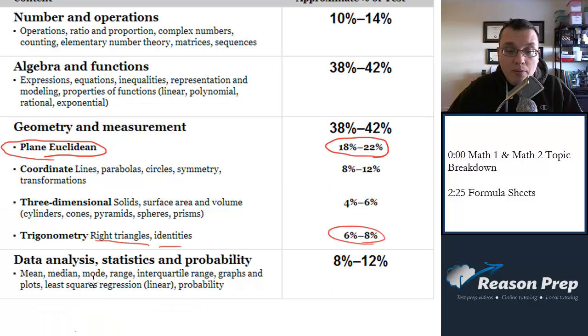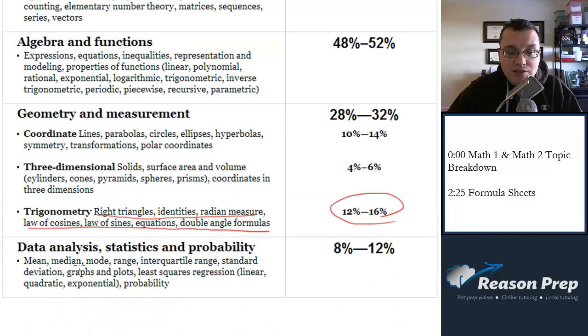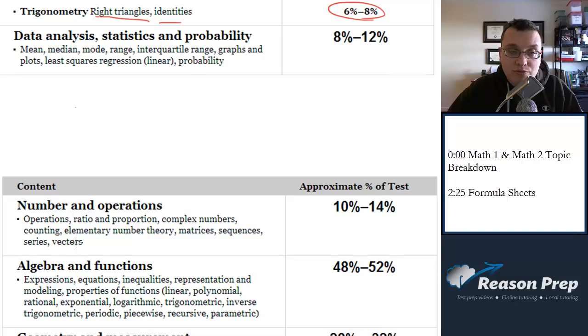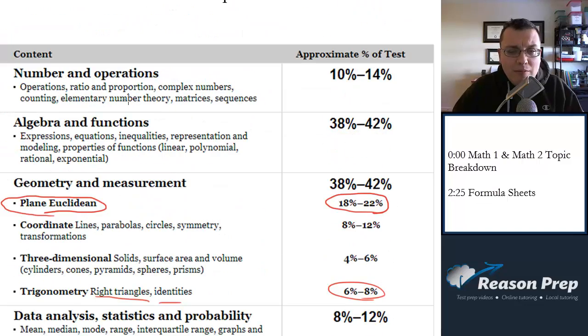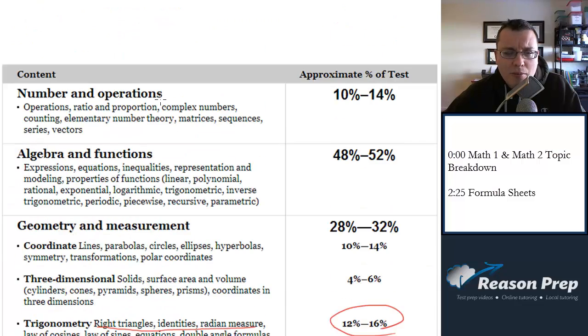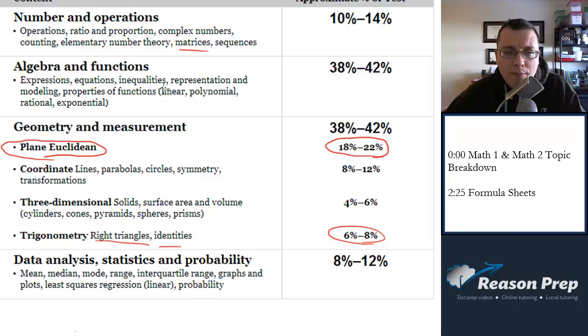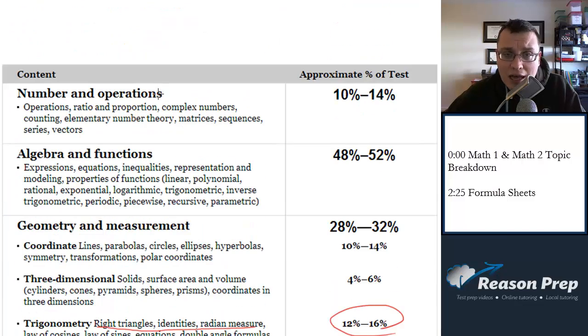Otherwise, though, the tests are basically about the same. There are some differences in the data analysis in terms of regression, which we've talked about before. The numbers and operations look about the same. They claim that there's matrices on this test. I haven't, I think, seen any matrices on Math 1 yet, but it's in their rubric, so it is possible. But yeah, so otherwise the tests are about the same. There are some differences there as well. But the major differences lie in the algebra and lie in the geometry.